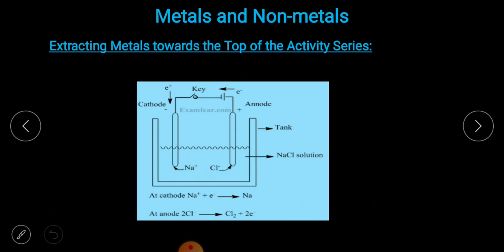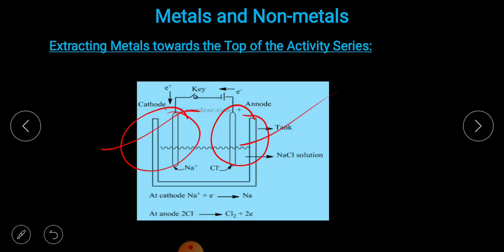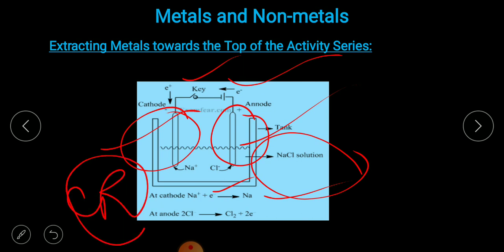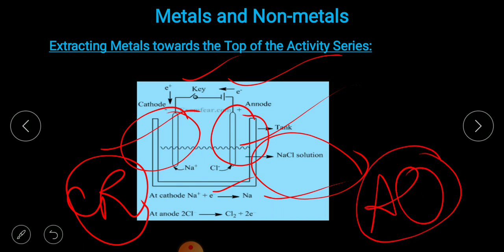In the electrolytic cell, we have two electrodes — cathode and anode — dipped in sodium chloride solution. When electricity is passed, at the cathode there is reduction: sodium ions gain electrons and sodium metal is deposited. At the anode there is oxidation: chloride ions lose electrons and chlorine gas is produced.